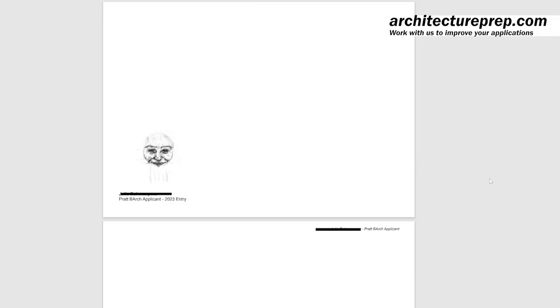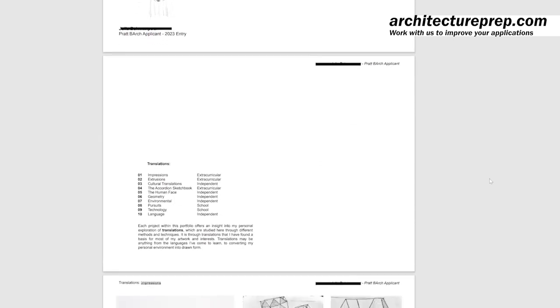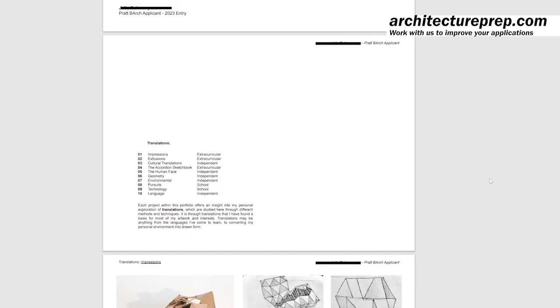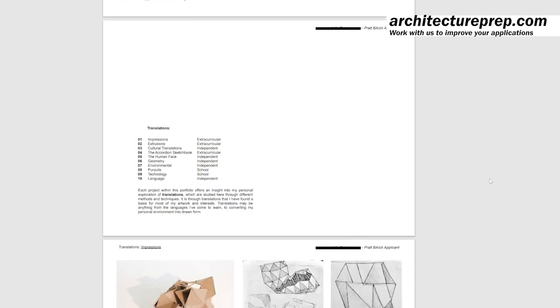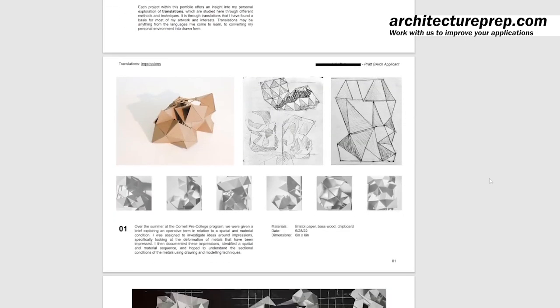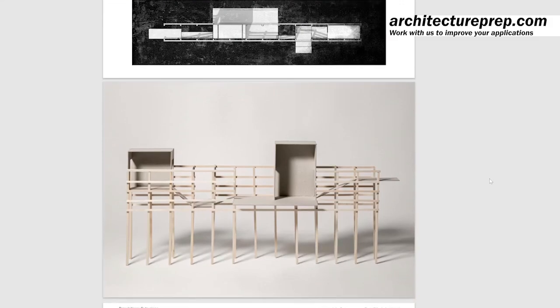Before we get into the projects, a bit about formatting. This is a roughly 20-page portfolio segmented into 10 projects, which is quite a lot. There were only a few pages each. Sometimes portfolios are just a few projects with lots of pages per project; sometimes it's a few pages per project — it depends on the school you're applying to. The whole portfolio was built around the concept of translations. Each project begins with a description and a number so you can tell when a new project starts.